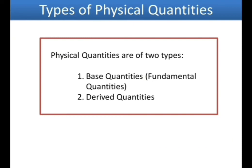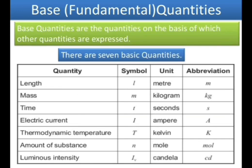Now, what are the types of physical quantities? We have learned that physical quantities have a standard SI unit, but physical quantities are also of two types. The first type is base quantities, also called fundamental quantities. The second type is derived quantities. Base or fundamental quantities are the quantities on the basis of which other quantities are expressed, and there are seven basic quantities in total.